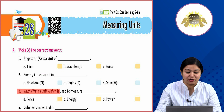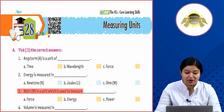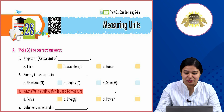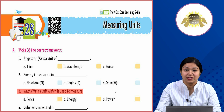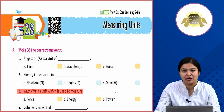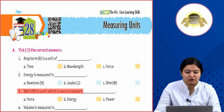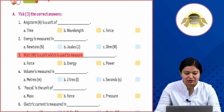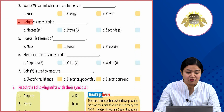Third: Watt is a unit which is used to measure — option A: force, option B: energy, option C: power. Watt ki unit kis cheez ko measure karne ke liye use ki jaati hai — power ko. So the answer is power.